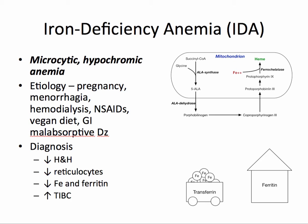Iron deficiency anemia can result from pregnancy, menorrhagia, hemodialysis, NSAID use, a vegan diet, or GI malabsorptive diseases. Iron deficiency anemia results in impaired heme synthesis in the mitochondria.